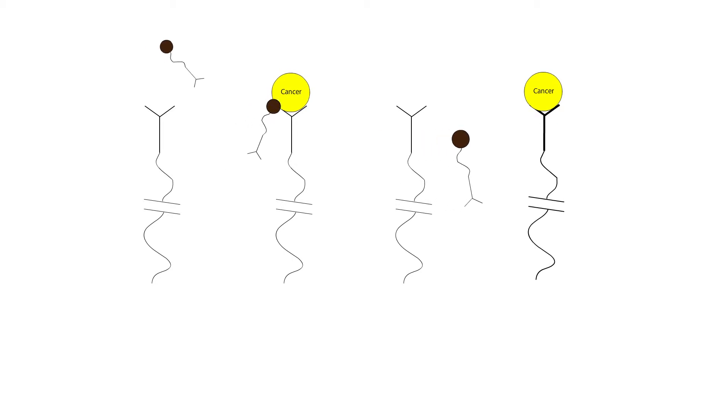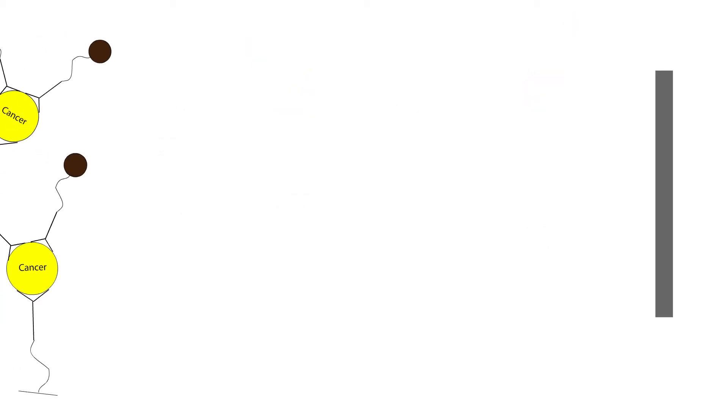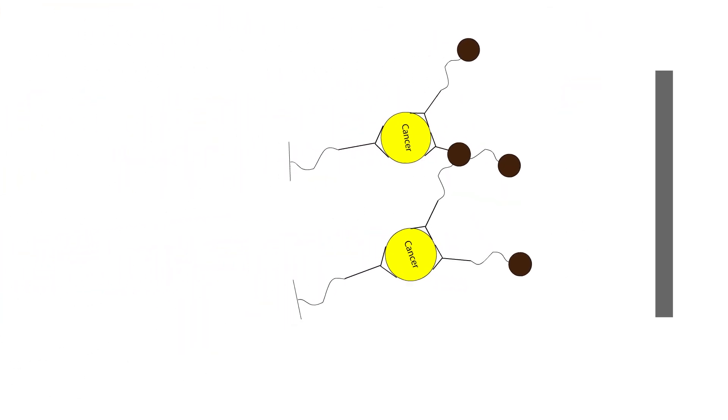Captured cancer cells are labeled with a cancer-specific antibody conjugated to a magnetic particle. Cancer cells are released from the wall by disrupting the cleavable linker. Cancer cells are then magnetically concentrated to the bottom of the tube for enumeration.